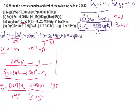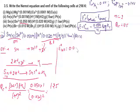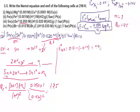Now calculate E°cell for part 3. At the cathode, H₂ electrode has E° = 0.0 V. At the anode, tin has E° = −0.14 V (reduction potential). E°cell = 0.0 − (−0.14) = +0.14 V.